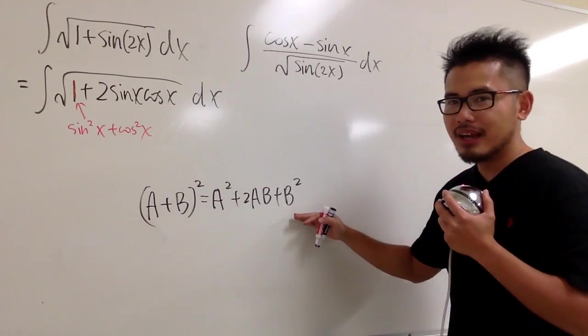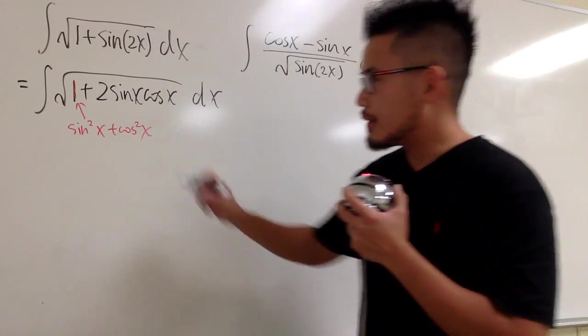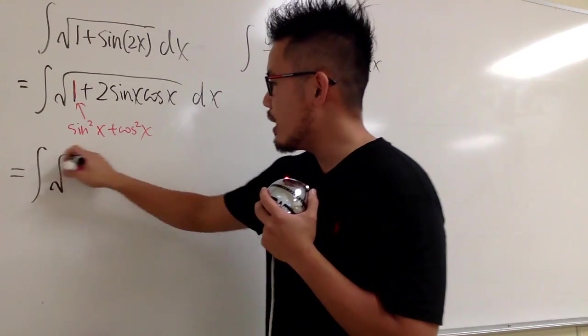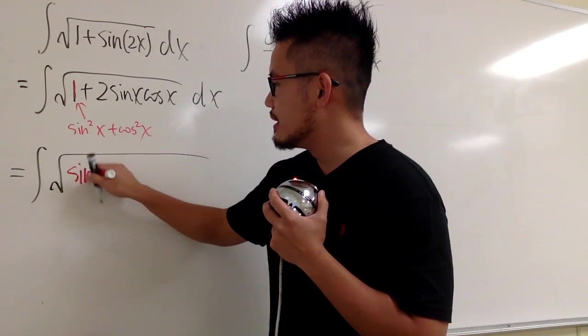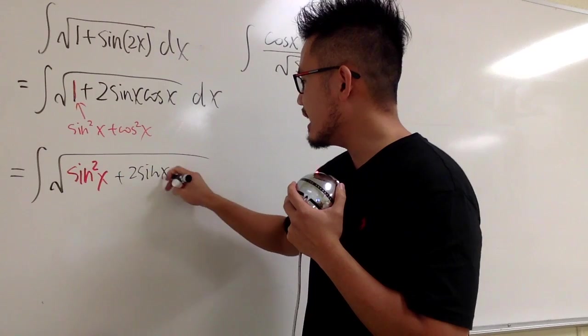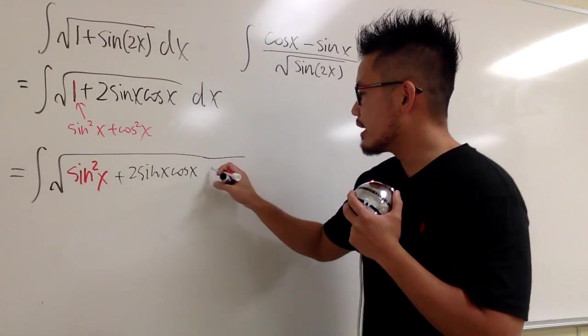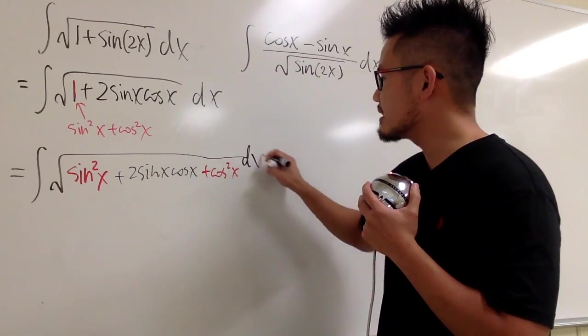We have a famous identity. But this time, we are going to use it backwards. We know that the 1 is the same as sine square x plus cosine square x. This time, I'm going to rewrite the 1 as that. So, I will achieve this step. That means I can factor it. Let's come back here and continue. This is now the integral of square root, and let me write down the sine square x first, and then plus 2 sine x cosine x. And then let me write down the plus cosine square x right here.